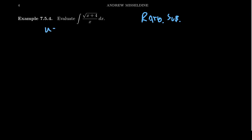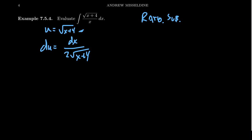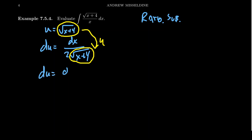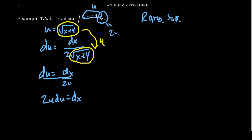For the rationalizing substitution, set u equal to the square root of (x+4). Taking the derivative by the chain rule gives du = dx / (2√(x+4)). The key insight is that both the original function and its derivative contain that same square root. Since u = √(x+4), we have du = dx / (2u), and clearing denominators gives 2u du = dx.